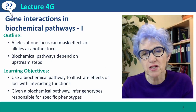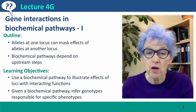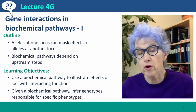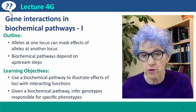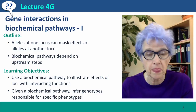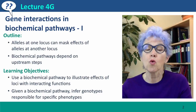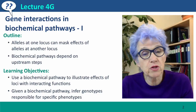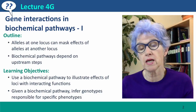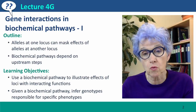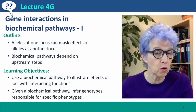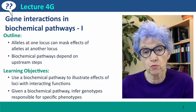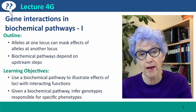Hi, everyone. Welcome back to Useful Genetics. This is Lecture 4G, where we're going to talk about gene interactions. First, we're going to consider a case where genes act independently — they don't interfere with each other's effects on phenotype. Then we'll consider situations where alleles of different loci interact, so that sometimes the presence of a particular allele at one locus prevents us from knowing which alleles are present at another locus. We'll start with a simple example of a simple biochemical pathway.